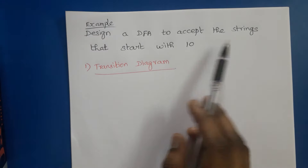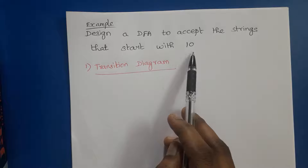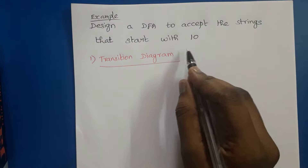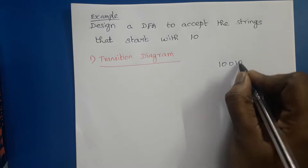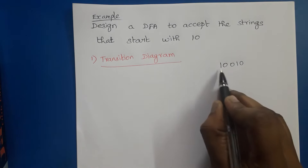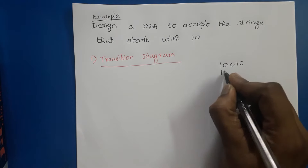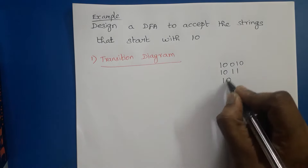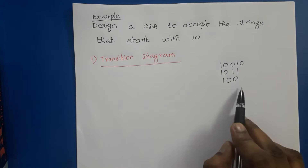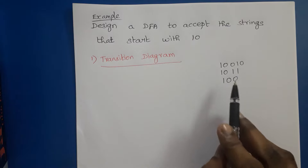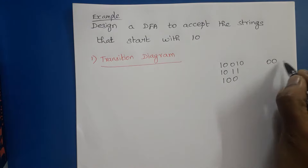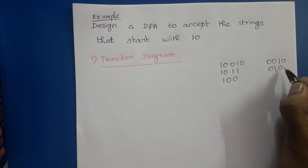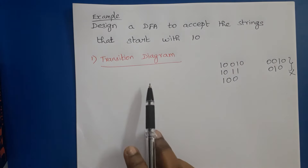Now we can see one example: construction of a DFA to accept strings that start with one zero — that is, all binary strings that start with 10. For example, 1000 10 and 10 11 are correct input strings because they start with 10. Strings like 00, 10, 010 should be rejected by our DFA. There are three representations: transition diagram, list of transition functions, and transition table.